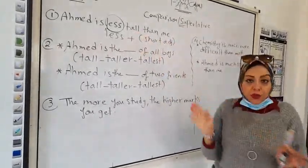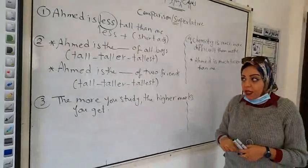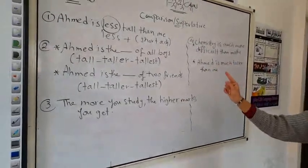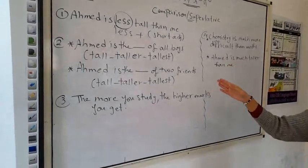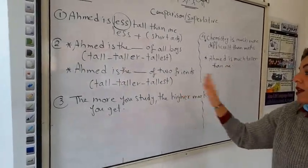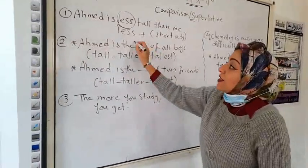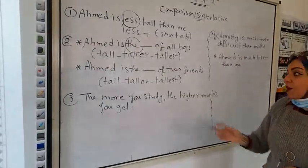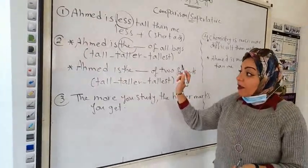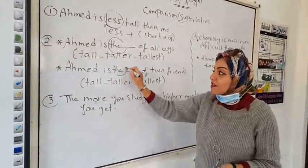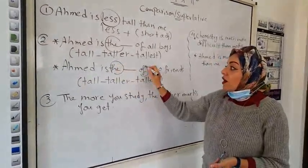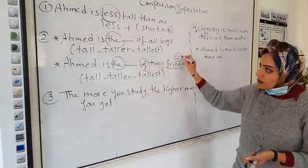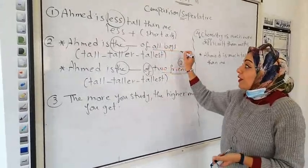Instead of saying that Ahmed is shorter than me, I'm going to say that Ahmed is less tall than me. It's another way of saying this. So exception number one, we can use less, not more, less only with a short adjective. Look at something, a short adjective here is written without any addition. But the second one here, notice something. If I say Ahmed is the tallest of all boys, Ahmed is the tallest of two friends. That's okay. Notice something here.